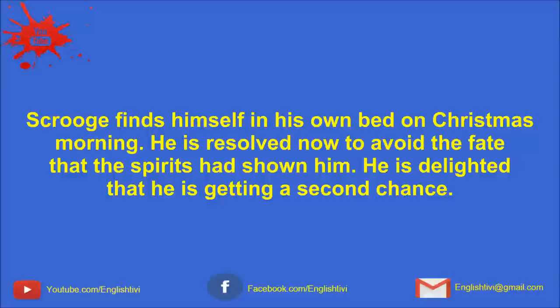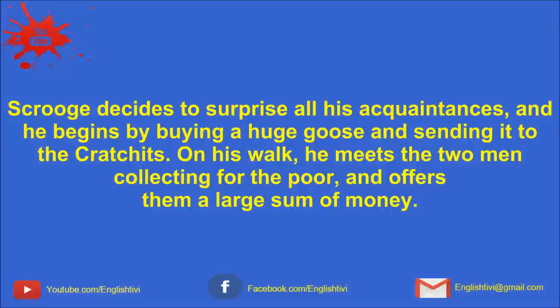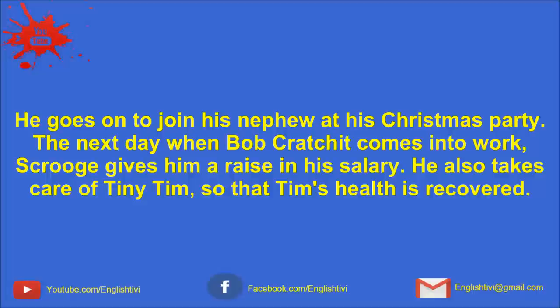Scrooge is going to die and no one will care. Scrooge finds himself in his own bed on Christmas morning. He is resolved now to avoid the fate that the spirits had shown him. He is delighted that he is getting a second chance. Scrooge decides to surprise all his acquaintances and he begins by buying a huge goose and sending it to the Cratchit's. On his walk, he meets the two men collecting for the poor and offers them a large sum of money. He goes on to join his nephew at a Christmas party. The next day, when Bob Cratchit comes into work, Scrooge gives him a raise in his salary. He also takes care of Tiny Tim so that Tim recovers his health.